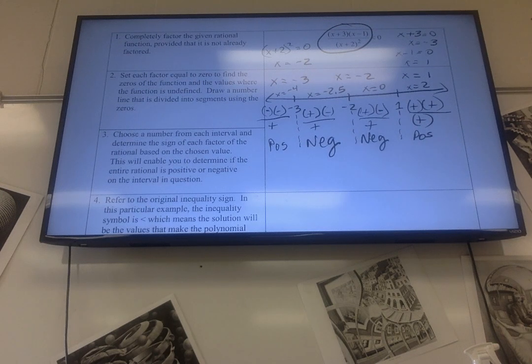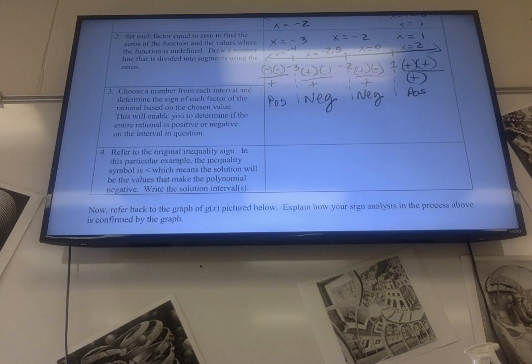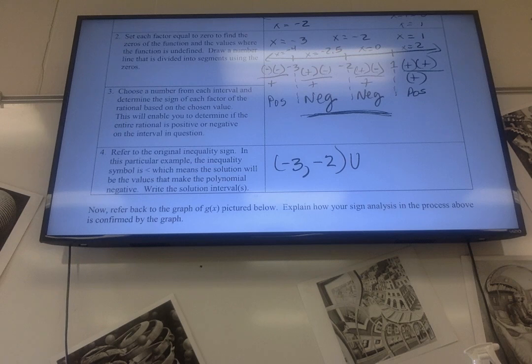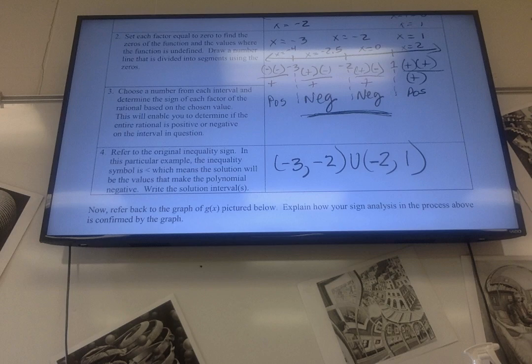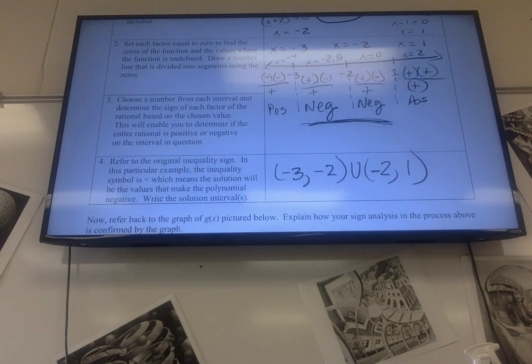Which is just less than zero, so it's less than zero everywhere. It's negative, which are these two, so that would be from negative 3 to negative 2, union negative 2 to 1. I didn't include negative 2 because at negative 2 it's undefined.